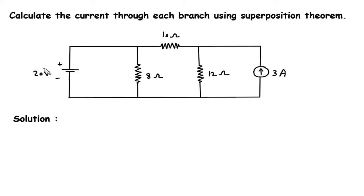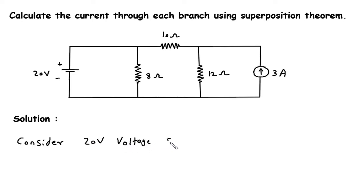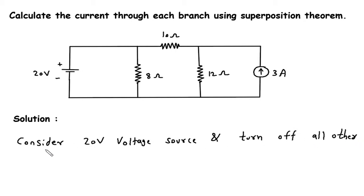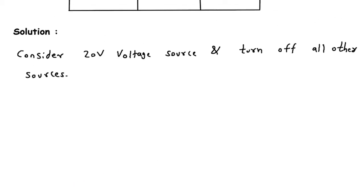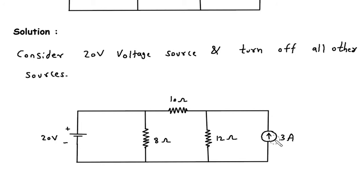First, we will consider the 20 volt voltage source and turn off all other sources. If we turn off the current source, it will be an open circuit.